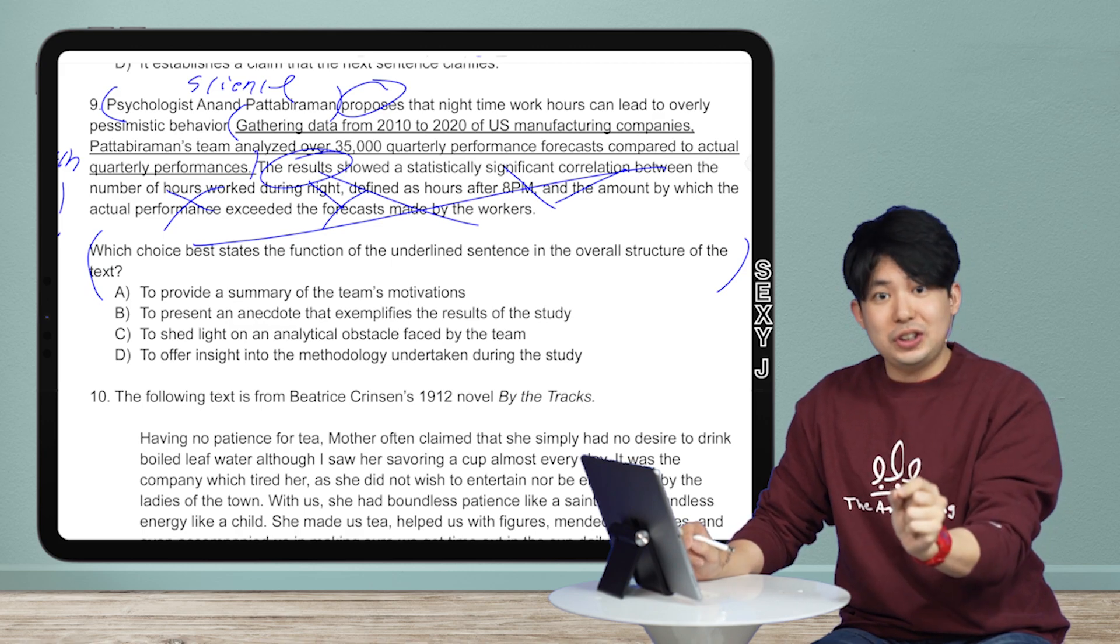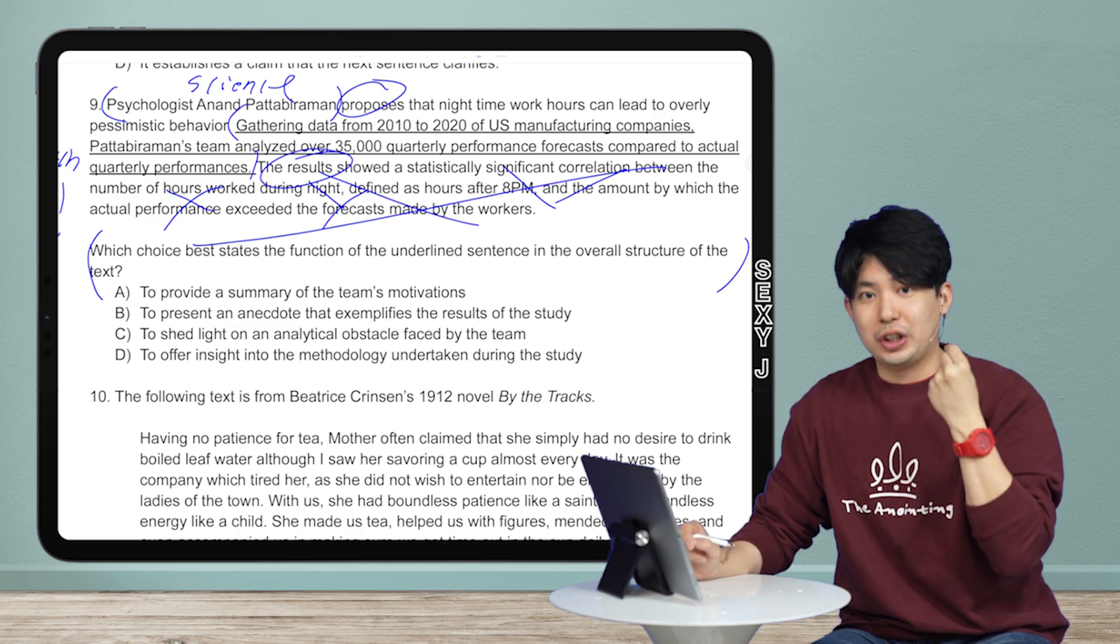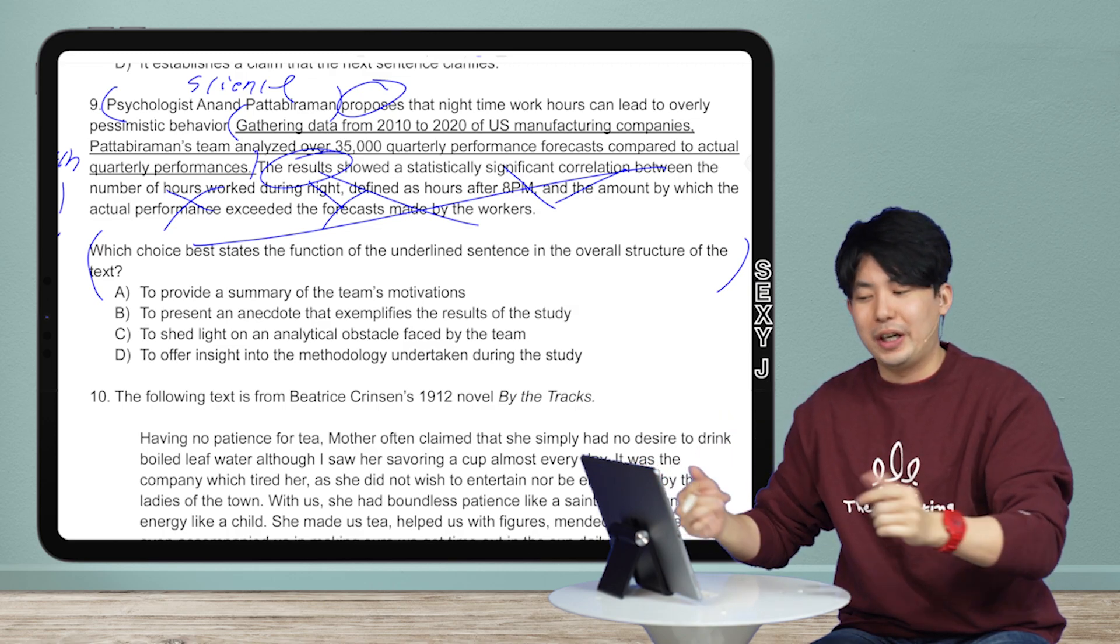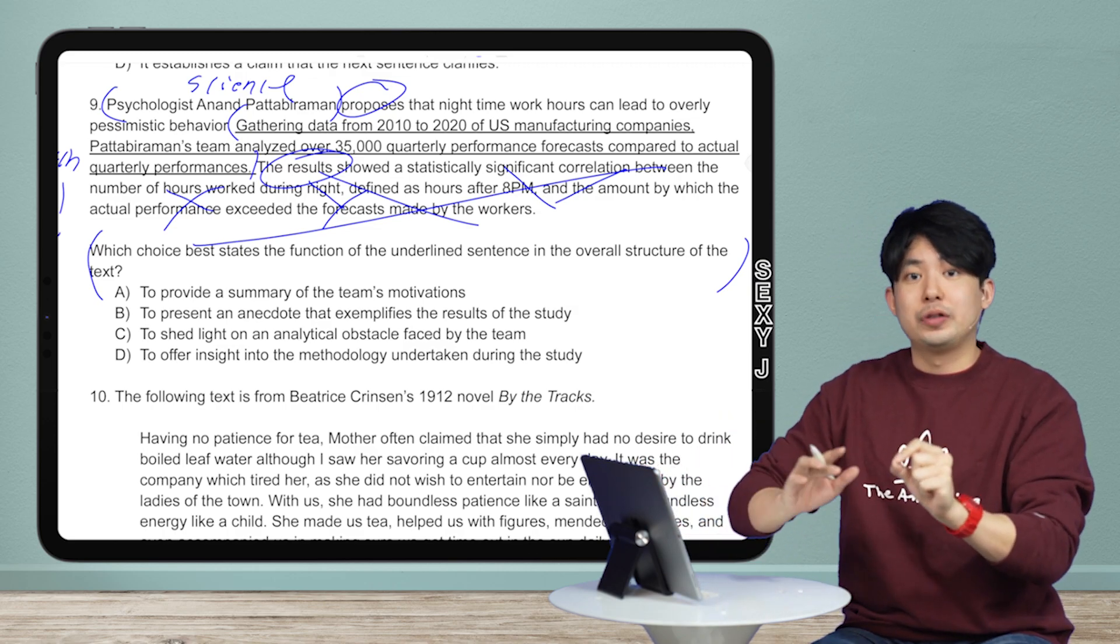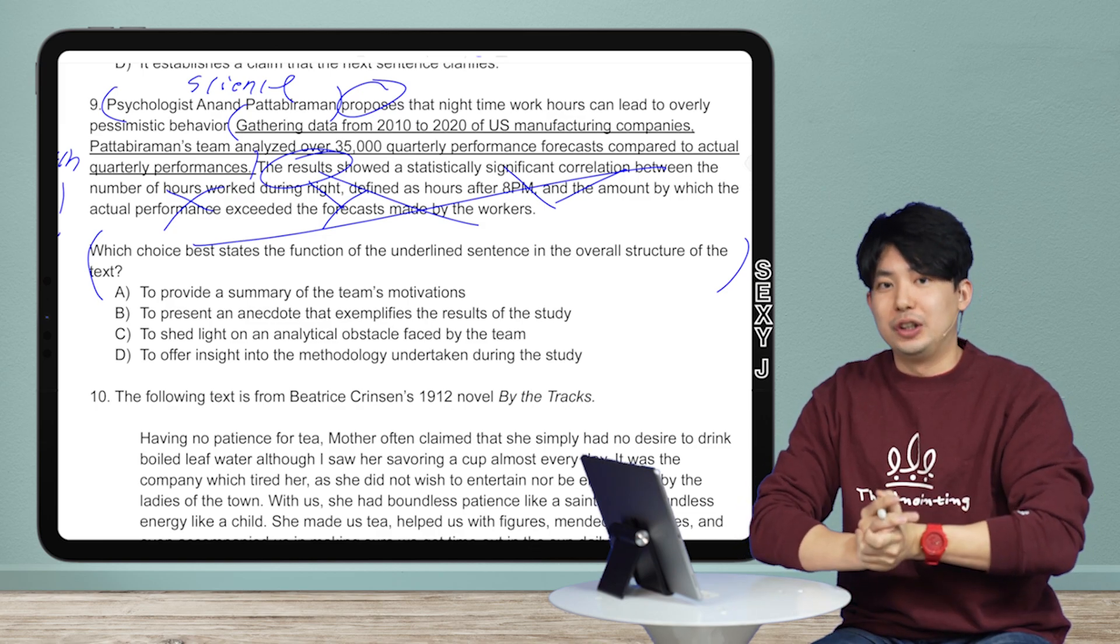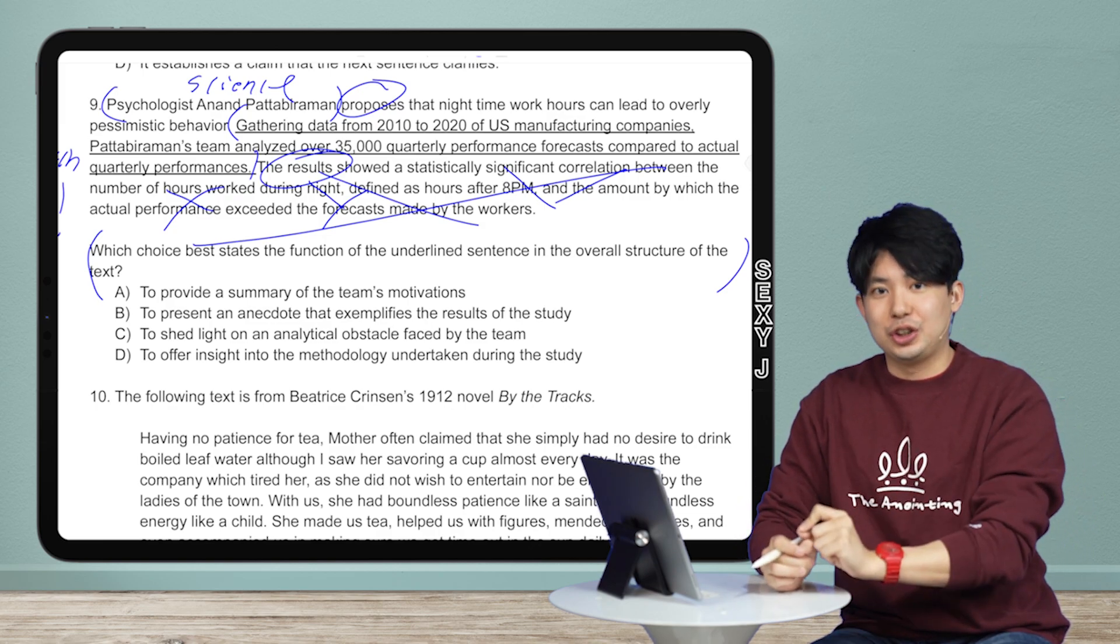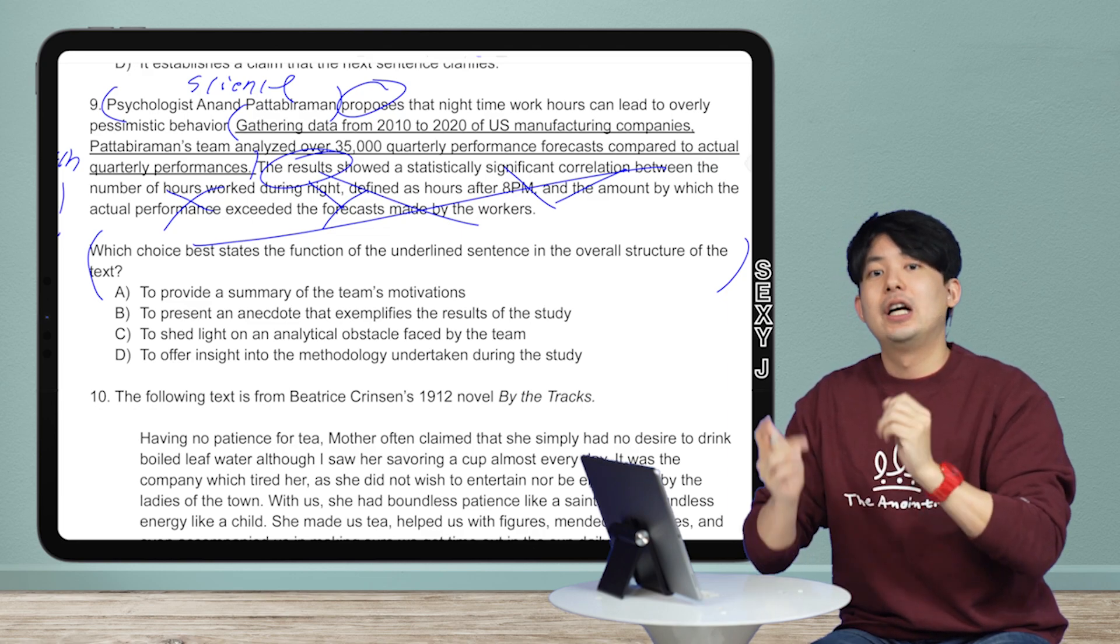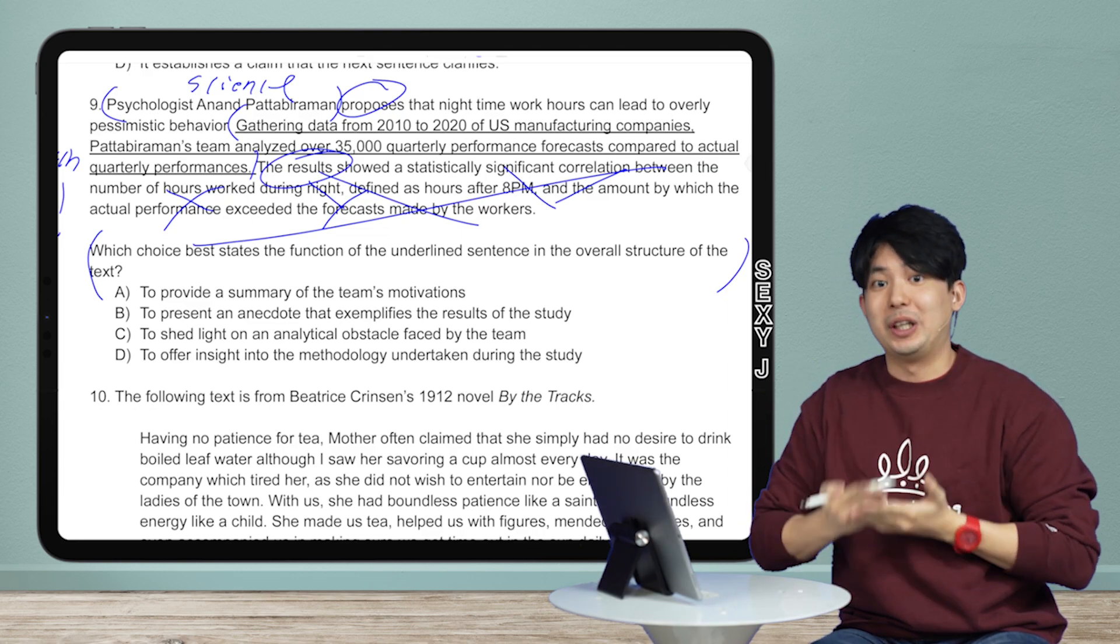And notice that none of these answer choices are the good answer I just said. Are you shocked by that? Hopefully not, because this is a pretty common trick. The best answer will oftentimes be missing on the SAT because the best answer will be obvious. Then what is a good answer for the SAT? Remember, extreme answer choices are bad. Remember that video, guys? Not nothing answer is the best answer.